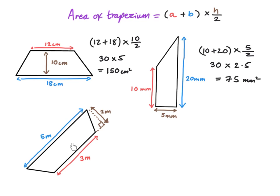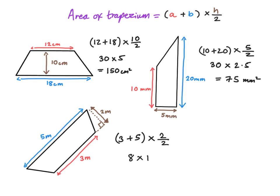Now for the last one. Again, we add the parallel sides first: that's 3 plus 5. Then we multiply the sum by half of the height. The height is the perpendicular distance from one parallel side to the other — clearly the perpendicular distance here is 2 meters. So we multiply (3 + 5) by half of 2, which is 2 divided by 2. Simplifying: 3 plus 5 is 8, and 2 divided by 2 is 1. So 1 times 8 is 8 meters squared. The area of this trapezium is 8 meters squared.